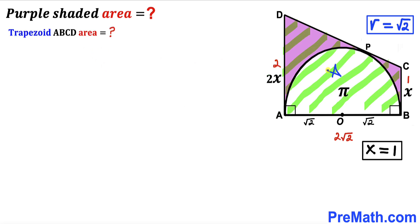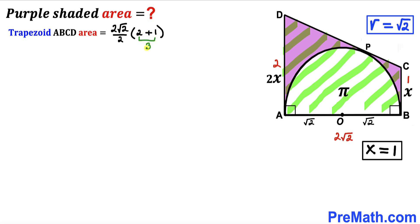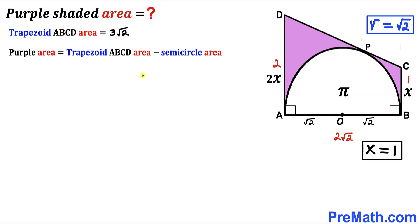Now we calculate the area of trapezoid ABCD using the formula: Area = h × (base_a + base_b) / 2. Here base_a = 2, base_b = 1, and height h = 2√2. So the area equals (2√2 / 2) × (2 + 1) = √2 × 3 = 3√2.